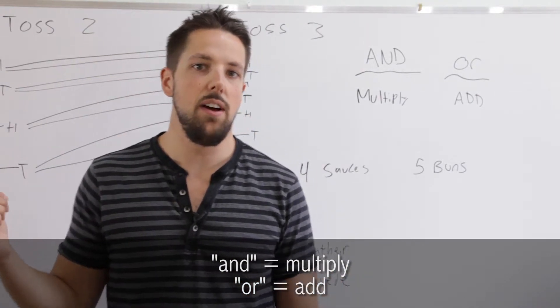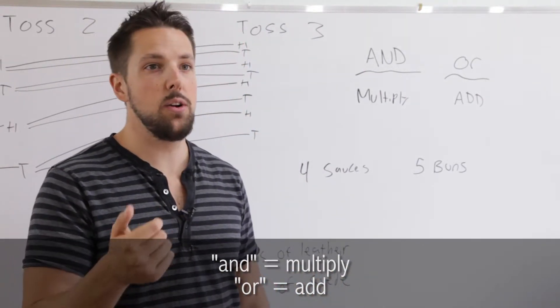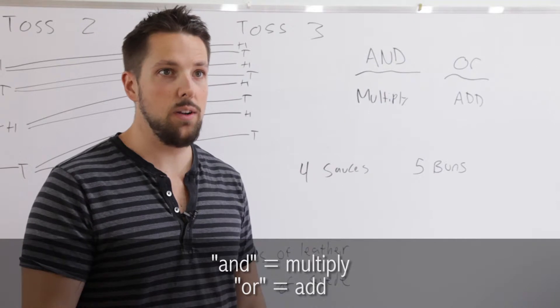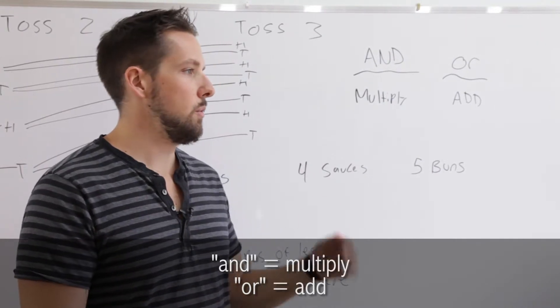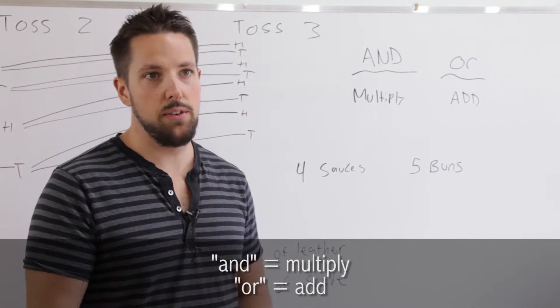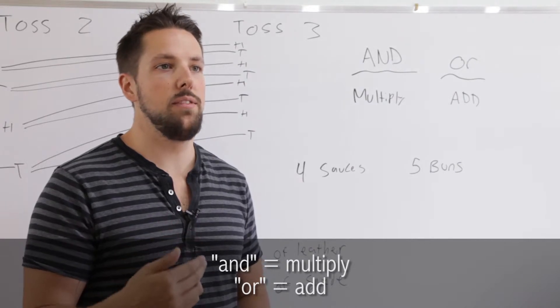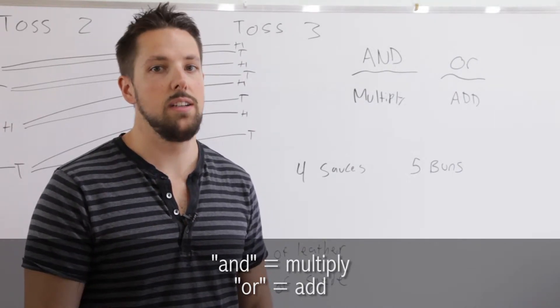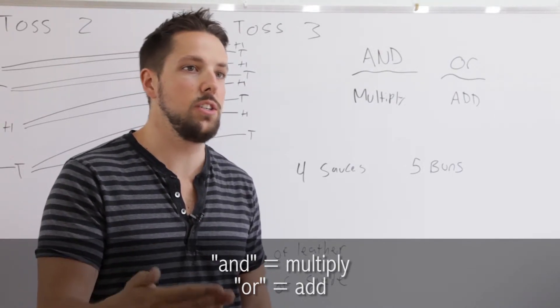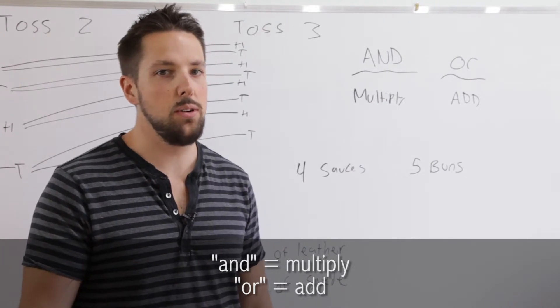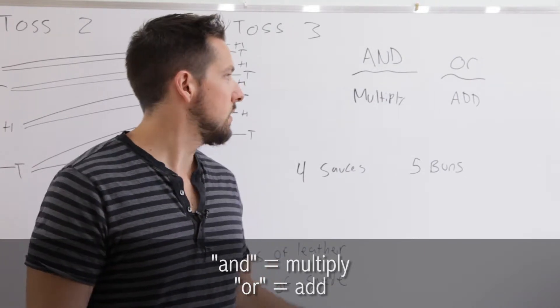So back to the example of the coin. We're flipping a coin and we're flipping another coin and we're flipping another coin. So we do the number of outcomes of the first one, two, times the number of outcomes of the second stage, two, times the number of outcomes of the third stage, two. Two times two times two equals eight. So that's the and rule.